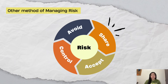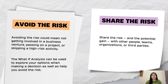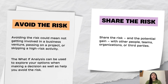Aside from the management cycle, other structures that can be used to manage risk are: avoid the risk, share the risk, accept the risk, and control the risk. Avoiding the risk means not getting involved in a business venture, passing on a project, or skipping a high-risk activity. It is a good option when taking the risk involves no advantage to your company or when the cost of addressing the effects is not worthwhile. The what-if analysis can be used to explore your options when making a decision and to avoid risk — it is a specific type of scenario analysis where you ask a series of what-if questions to predict potential complications and the impact on company operations.